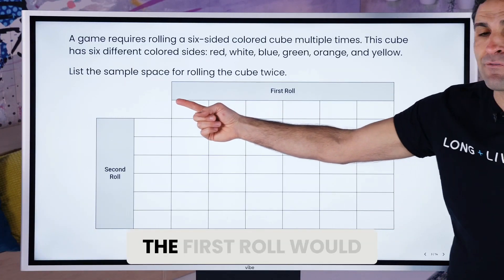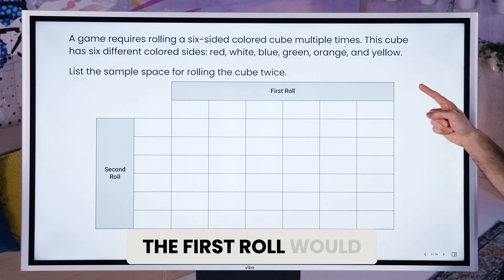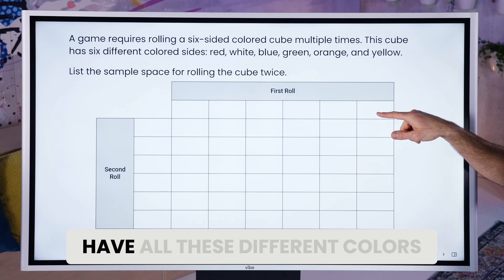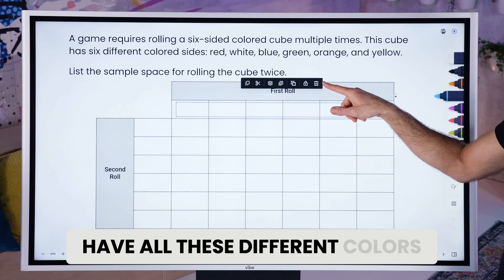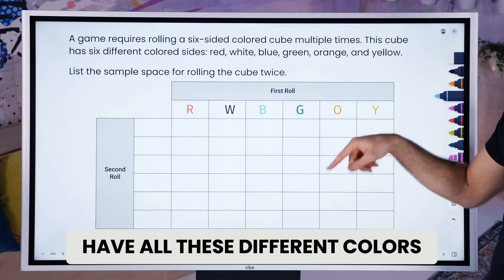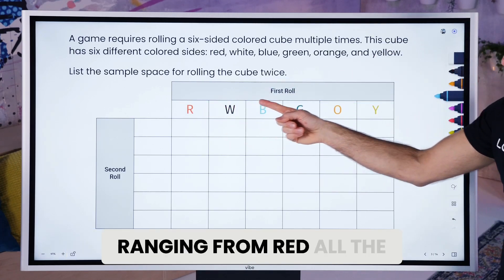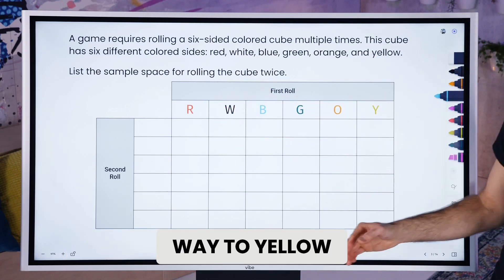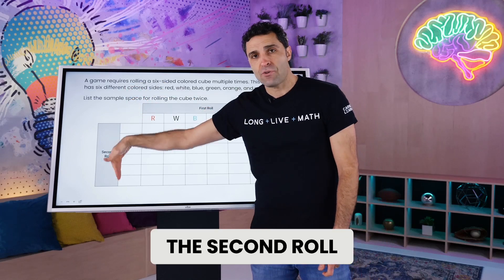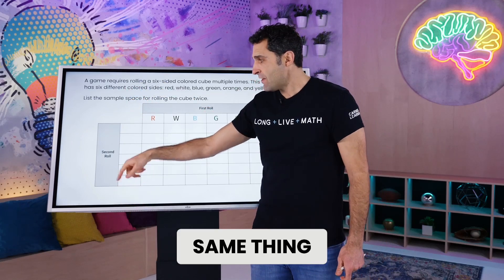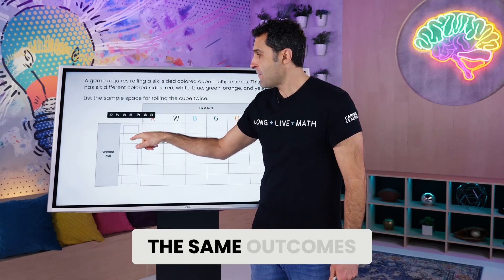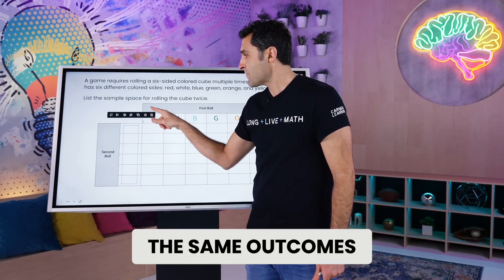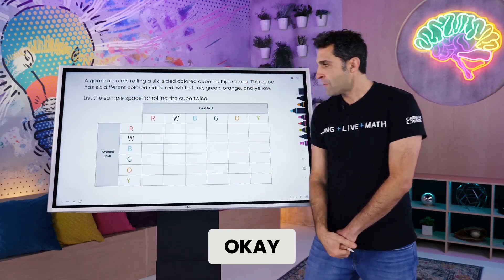We know that the first roll would have all these different colors, ranging from red all the way to yellow. We know that the second roll — same thing, you could get the same outcomes.